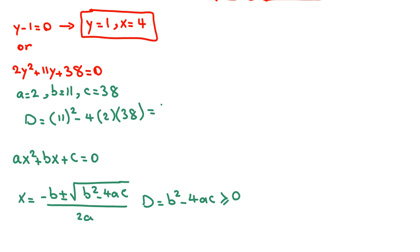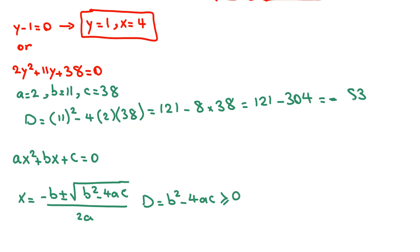The discriminant is 11 squared minus 4 times 2 times 38. That is 121 minus 8 times 38. 8 times 38 is 304. So 121 minus 304 is negative 183, which is less than zero. Therefore, there are no real solutions from this part. Our only answer is y equals 1 and x equals 4.